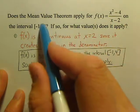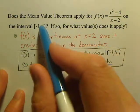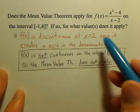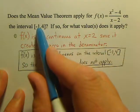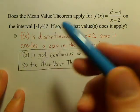And two is in the interval, so this value is actually in the interval. So this is not continuous on that interval. It has a hole or an asymptote or something like that.